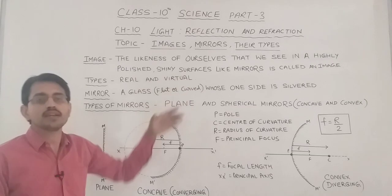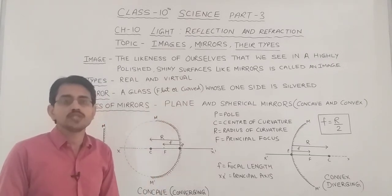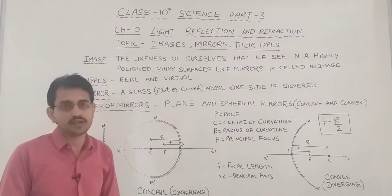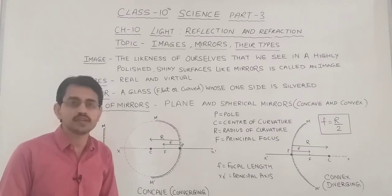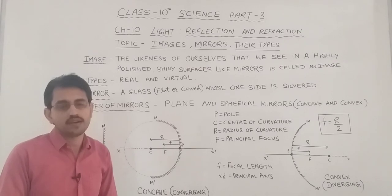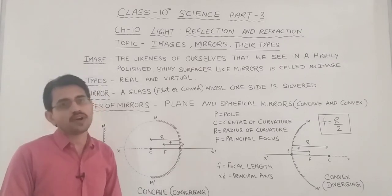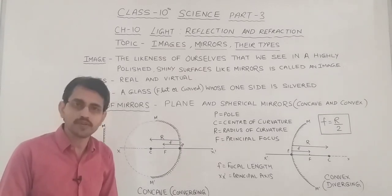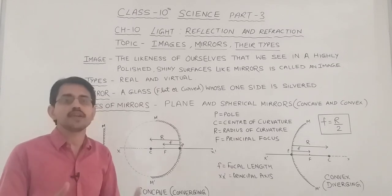There are two types of images: real image and virtual image. A real image is formed when light rays after reflection actually meet at a point, while a virtual image is formed when light rays after reflection do not actually meet but appear to meet at a point. Real image is always found in front of the mirror, while virtual image is found behind the mirror. Real image is always inverted, while virtual image is erect.